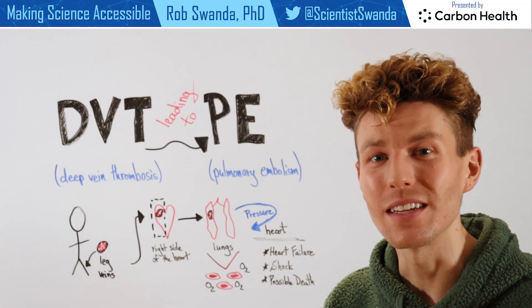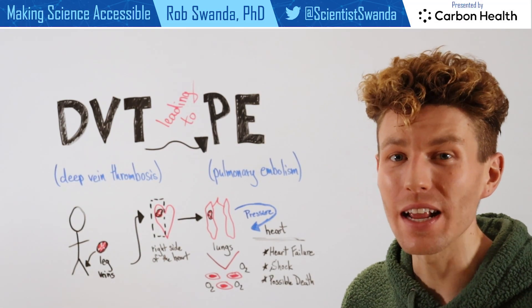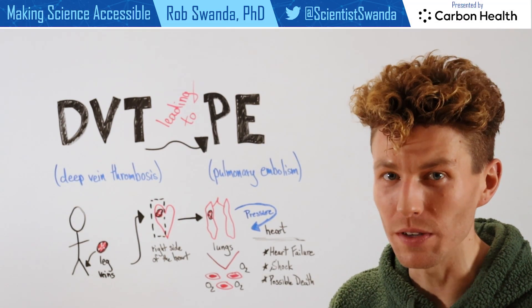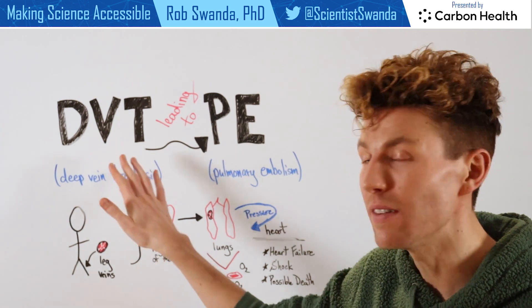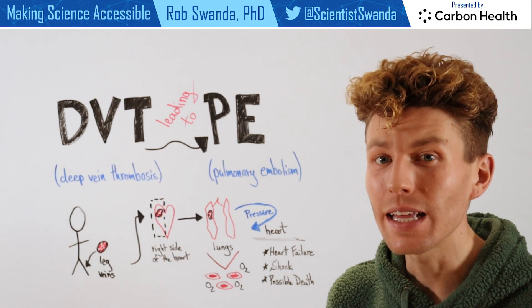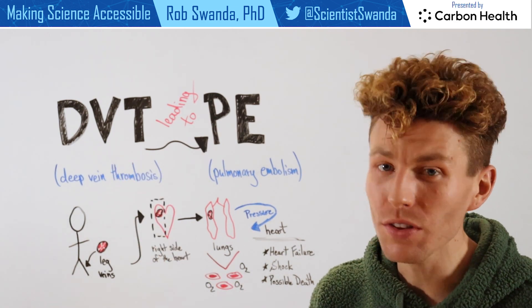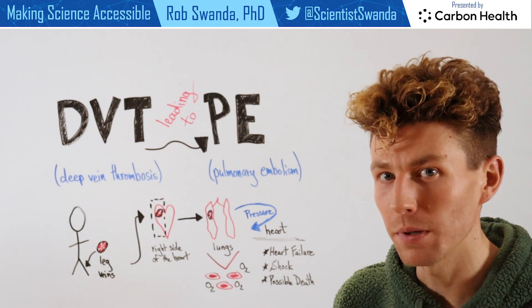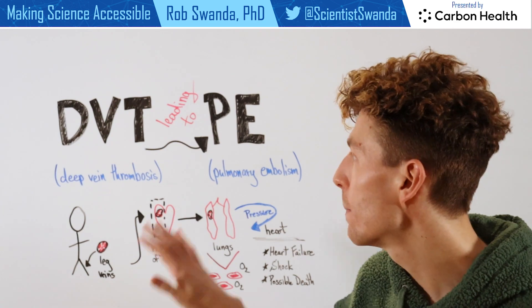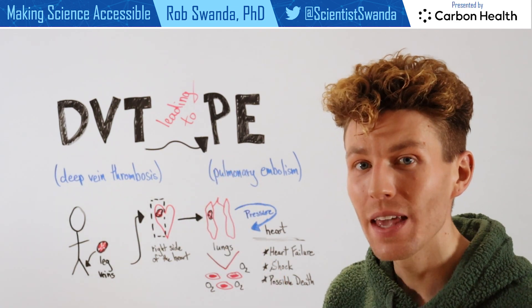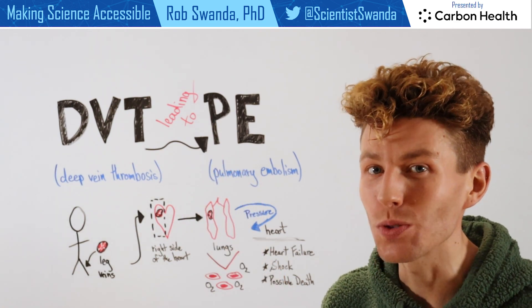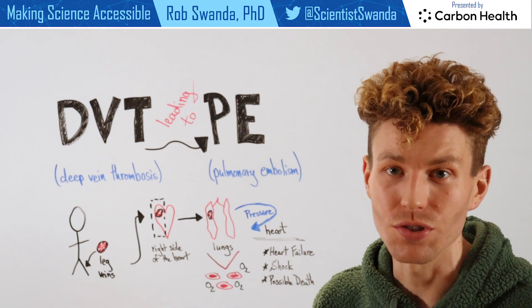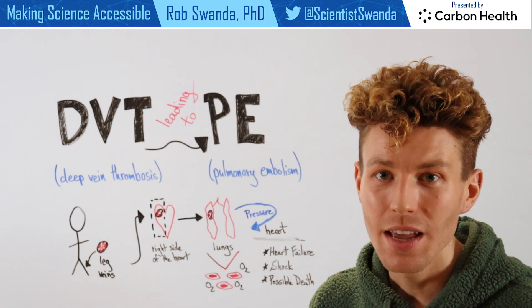Did you know that the condition deep vein thrombosis, which is often abbreviated as DVT, can lead to another condition known as pulmonary embolism, or PE? This occurs when a blood clot breaks off and then enters the heart.